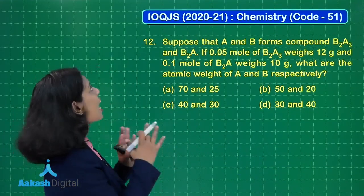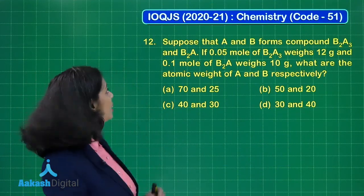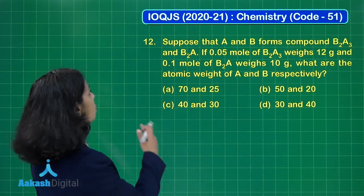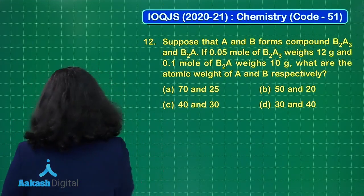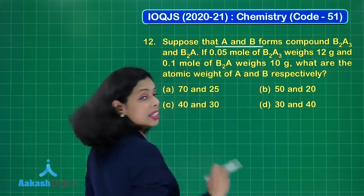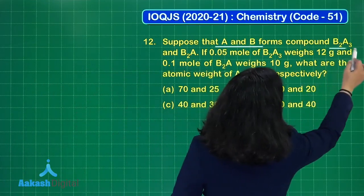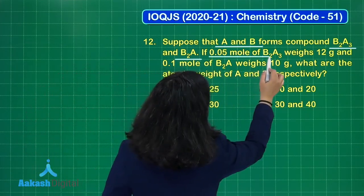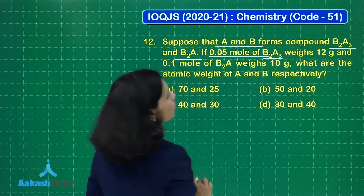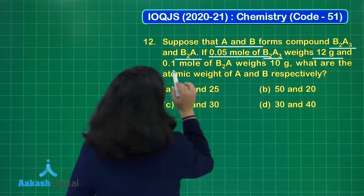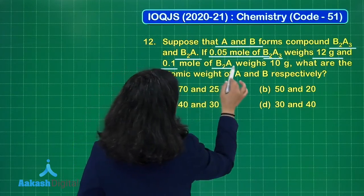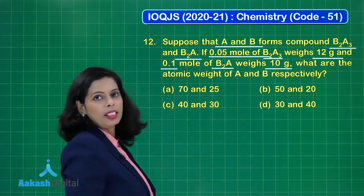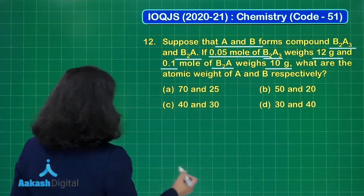Now let's look at question number 12 from this IOQJS paper. The question says: suppose A and B form compounds B₂A₃ and B₂A. We have two elements A and B combining to form two different compounds. Given that 0.05 moles of B₂A₃ weighs 12 grams, and 0.1 moles of B₂A weighs 10 grams, what are the atomic weights of A and B respectively?